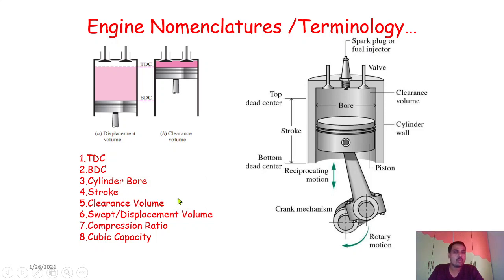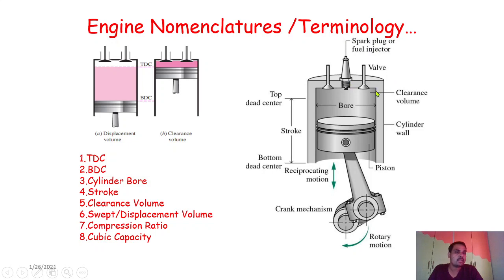Now we discuss clearance volume. When the piston is at TDC — its topmost position — there is always a gap between the piston top surface and the cylinder head. The piston must never strike the cylinder head or the valve mechanism. This gap between the topmost position of the piston and the cylinder head is called the clearance gap or clearance volume.